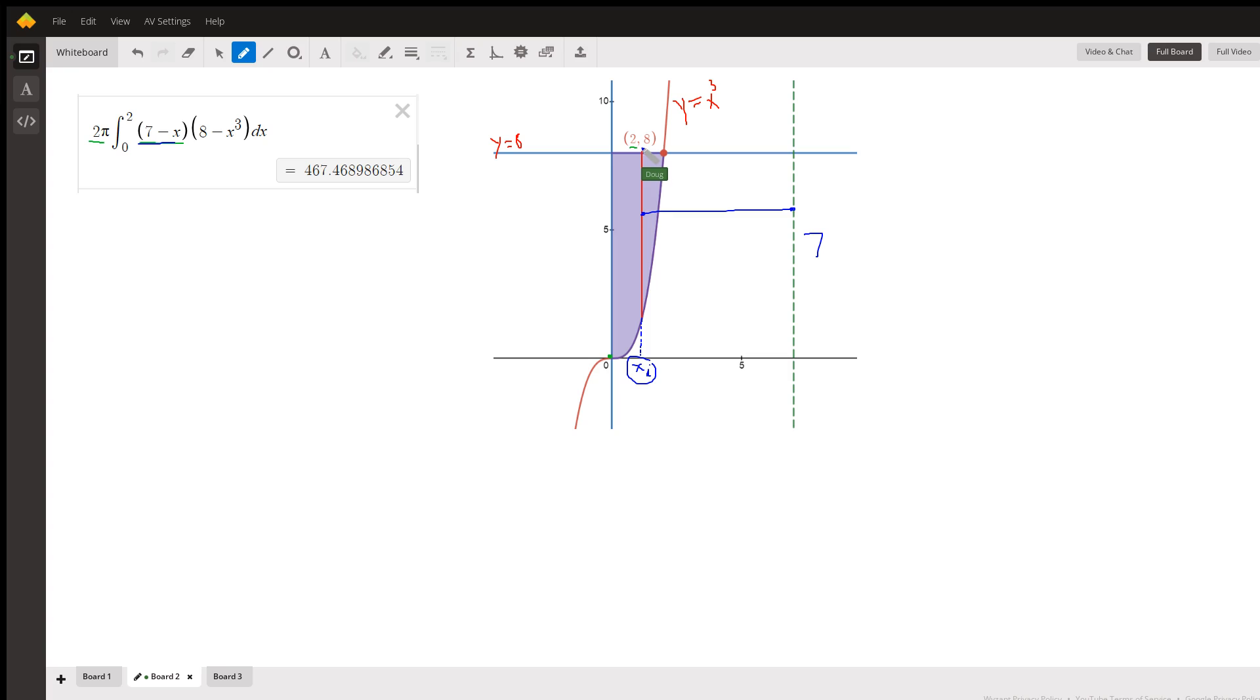And then again for the shell method, we multiply by the height of the shell. So that's the length of this red line right here, which is the y coordinate at the top minus the y coordinate at the bottom, which is the point (x, x cubed). So that's what this is right here, the height of the shell. Okay, and you can multiply these two binomials together.